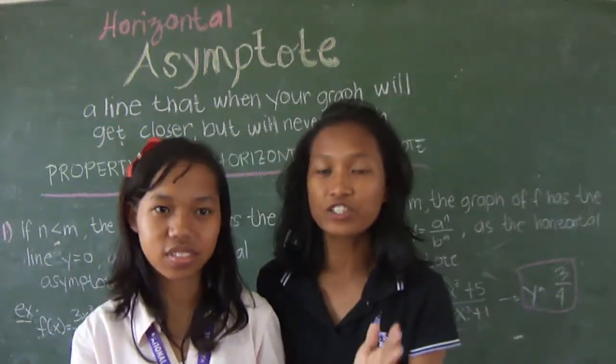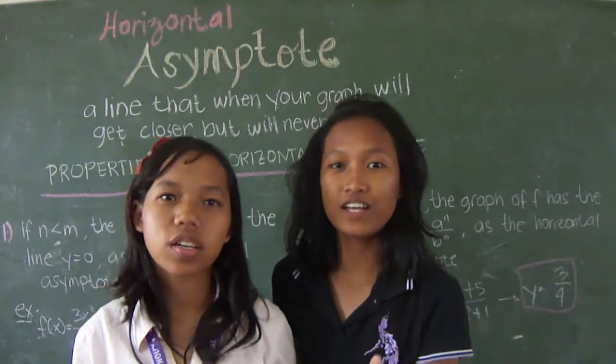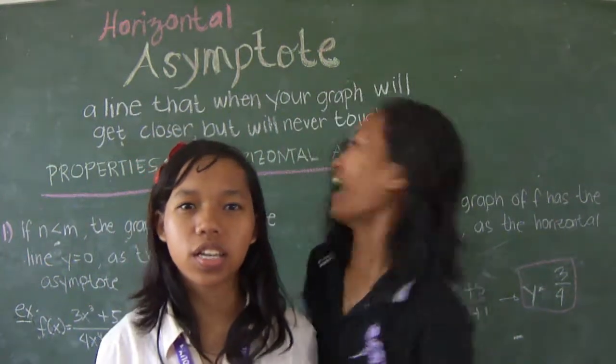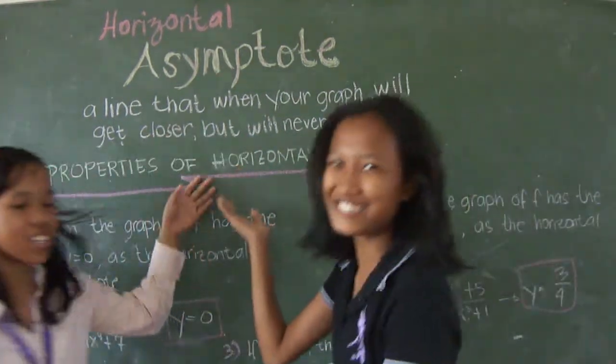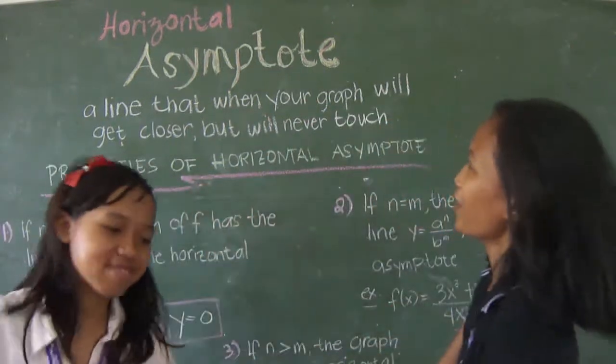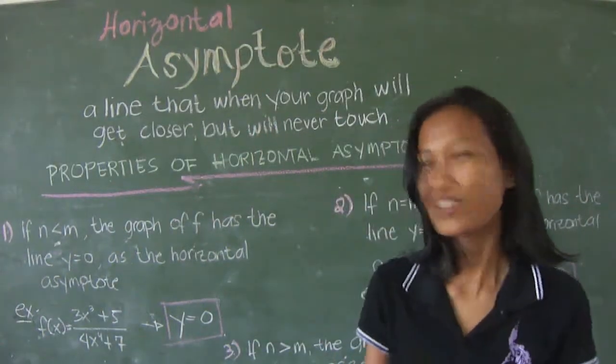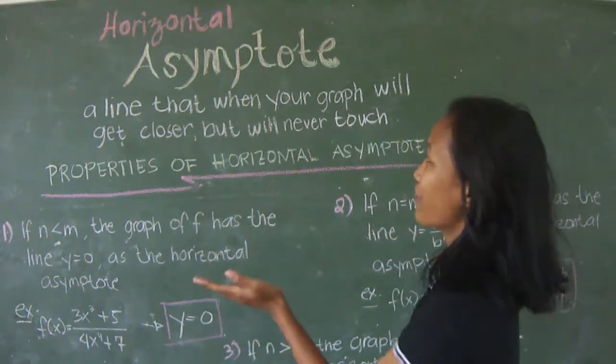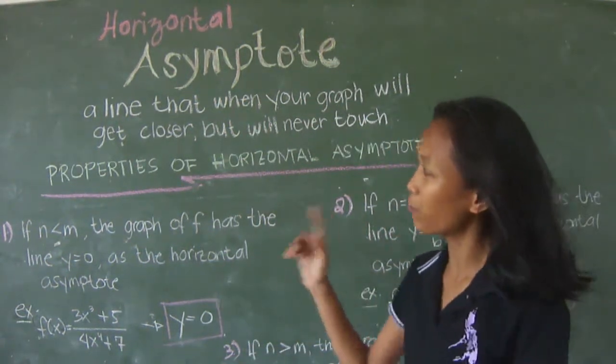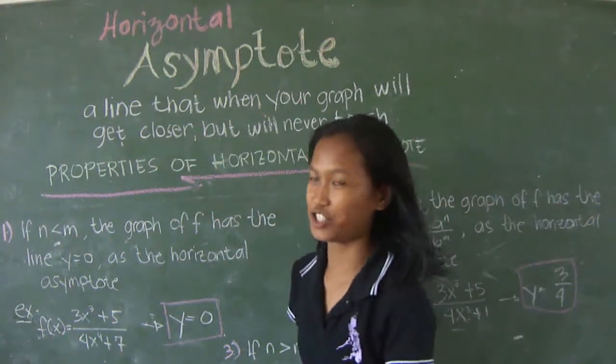We are here to teach you how to identify the horizontal asymptote. So first, what is an asymptote? An asymptote is a line that when your graph will get closer but will never touch.